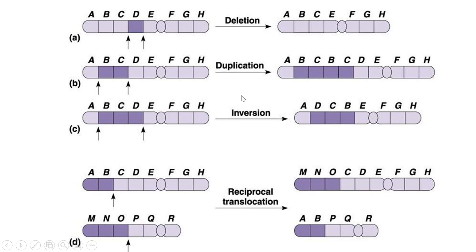The last type is translocation. Translocation happens when two different chromosomes exchange a large chunk of DNA — this is not the normal crossing over during interphase; this was never supposed to happen and occurs due to an error during meiosis. So genes A and B swap to the other chromosome, and genes M, N, O from that chromosome swap over. This can sometimes happen on the same chromosome as well, but it more commonly occurs between two different chromosomes.